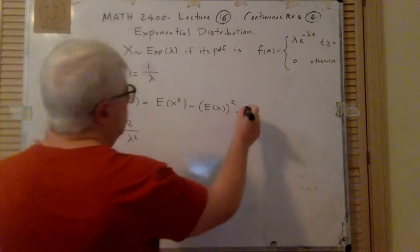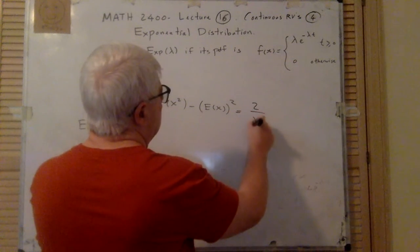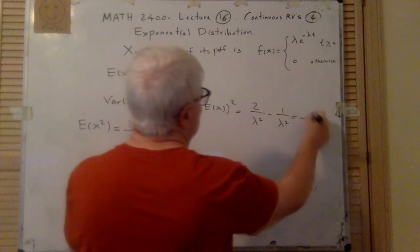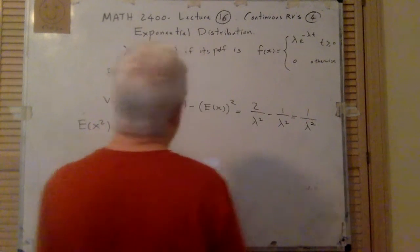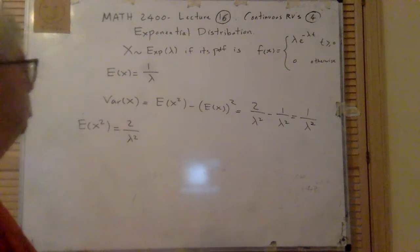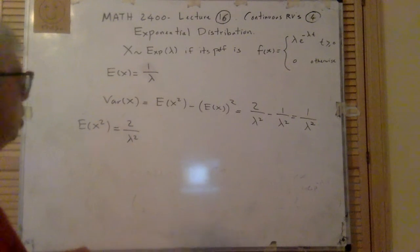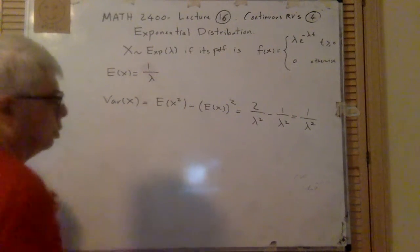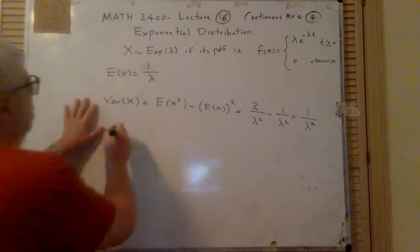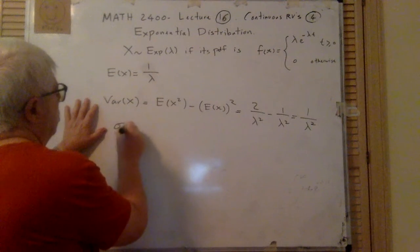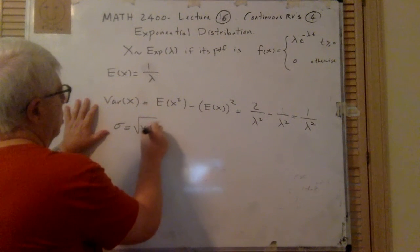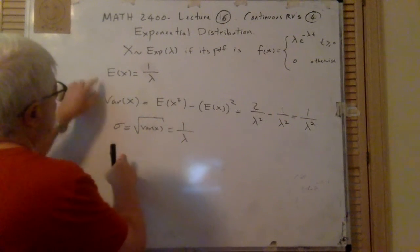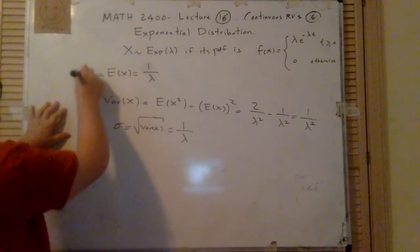So E[X²] = 2/lambda². Therefore, Var(X) = E[X²] - (E[X])² = 2/lambda² - 1/lambda² = 1/lambda². The standard deviation sigma is 1/lambda. So both sigma and mu equal 1/lambda.